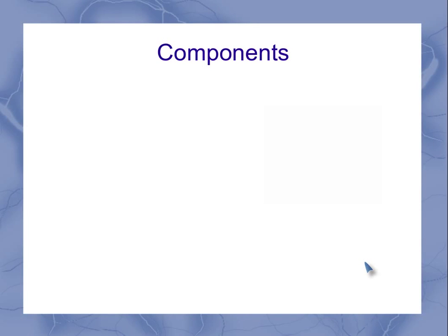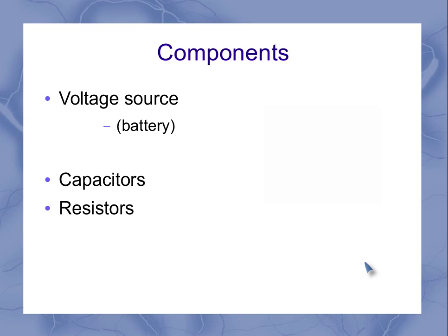So what type of components are we going to be working with in Physics 1? We'll have our voltage source, also known as battery. We've got things like capacitors and resistors, and then we have wires that are used to connect those things.